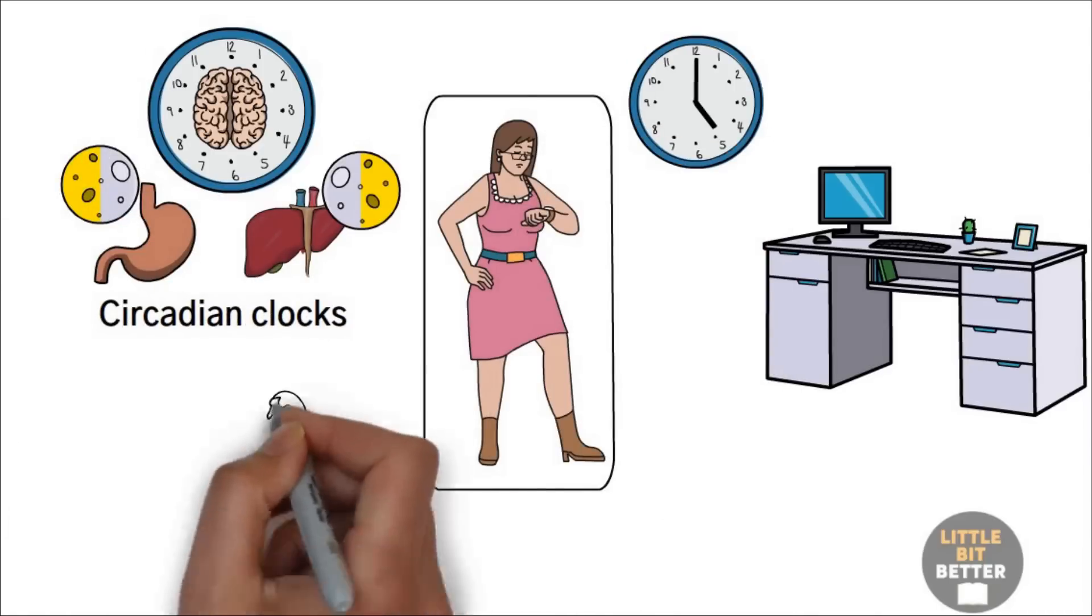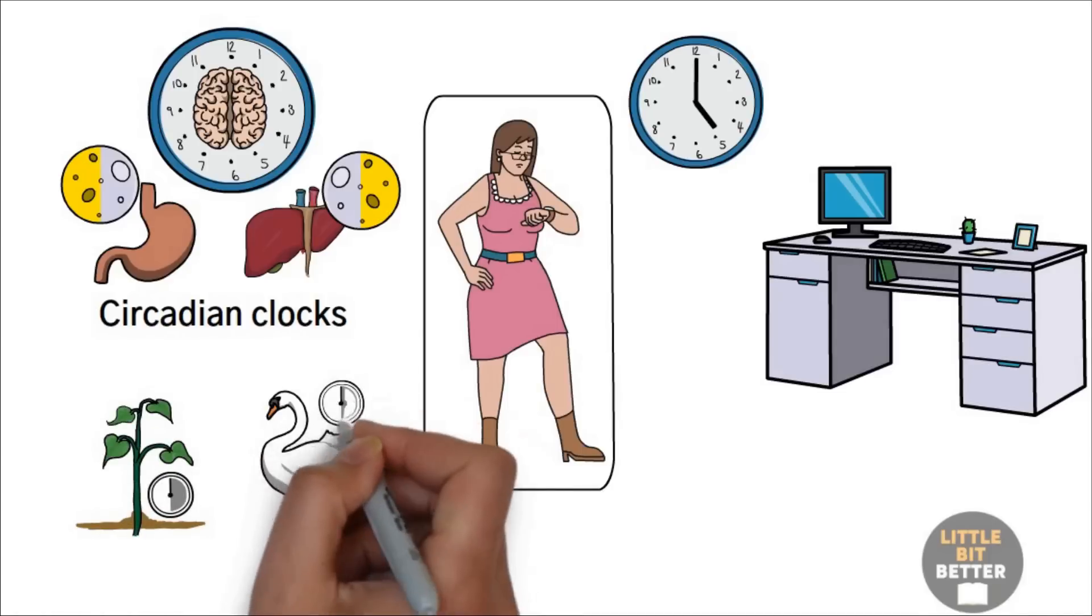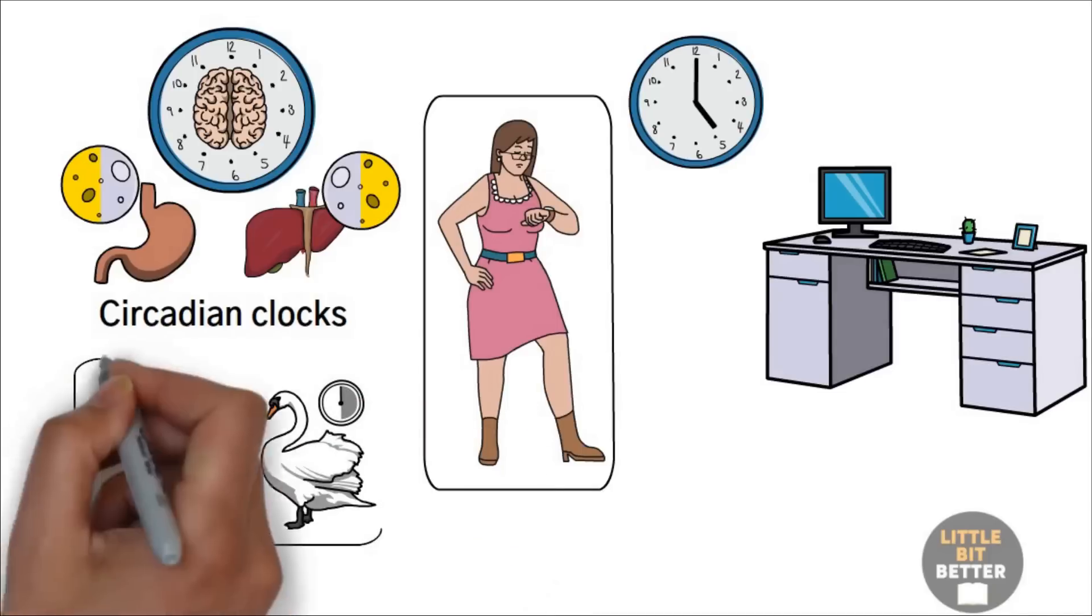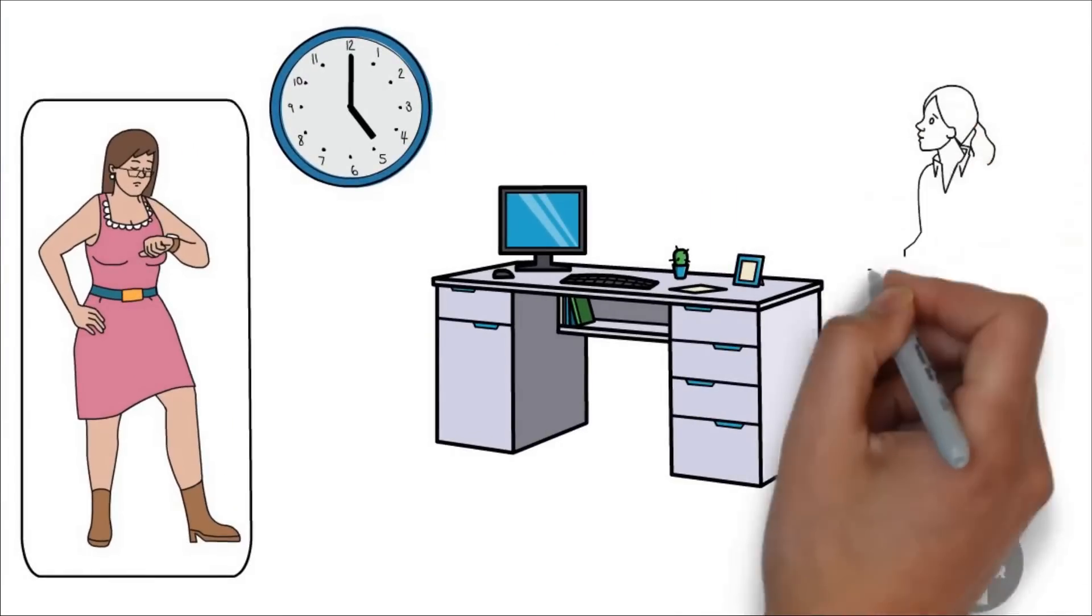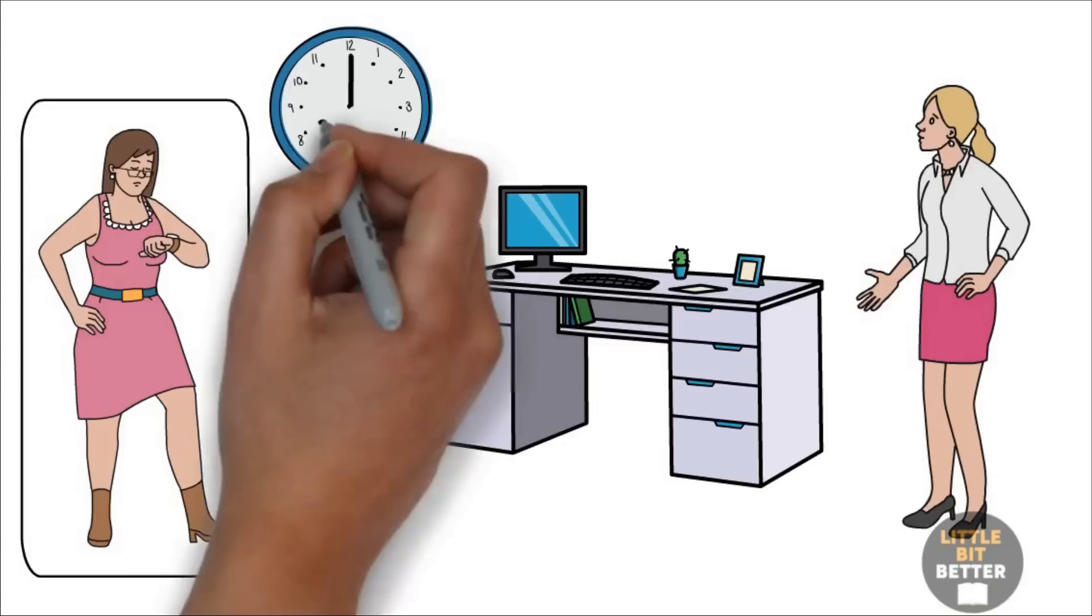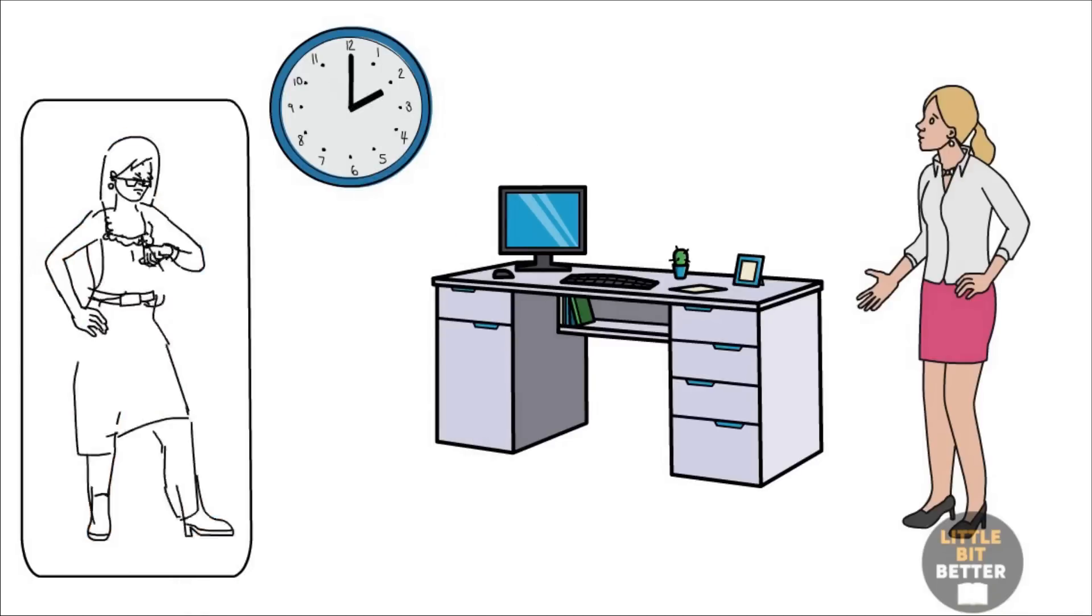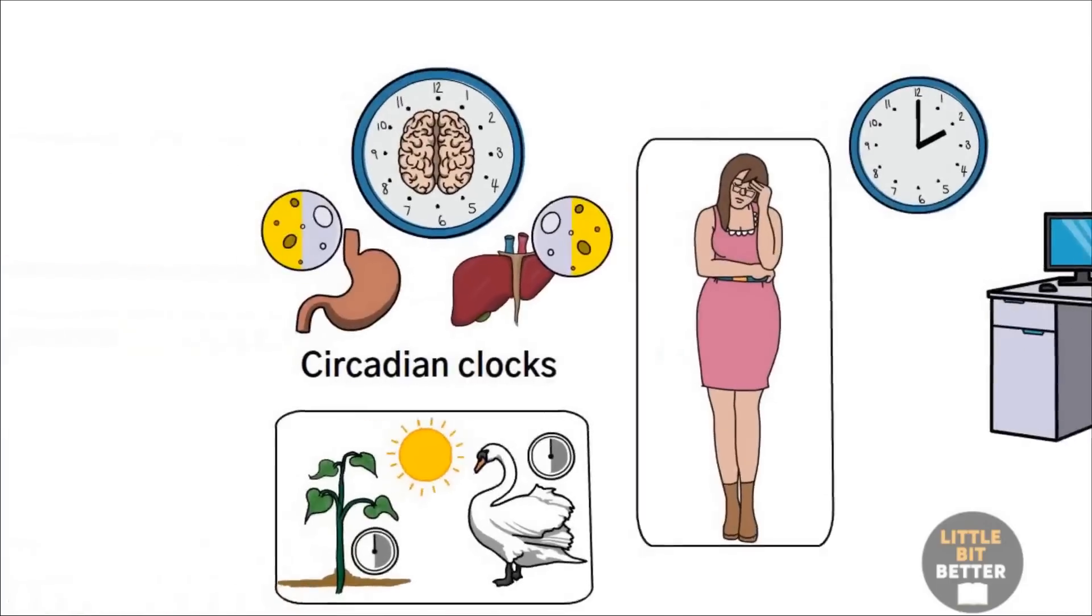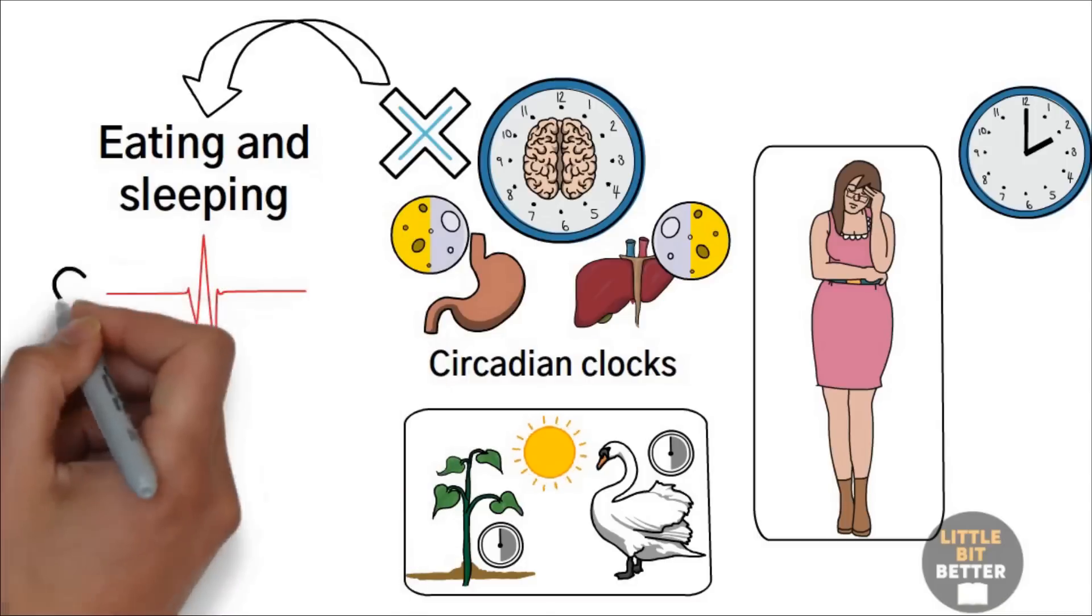Not just humans, every single animal and plant on earth has it. Unlike humans, plants and animals are very respectful to their circadian clocks. For example, if your boss expects you to be at work at 8 a.m. sharp every day, you can't just show up at random times each day. Just like coming to work inconsistently will ruin your career, being inconsistent with eating and sleeping will ruin your health.